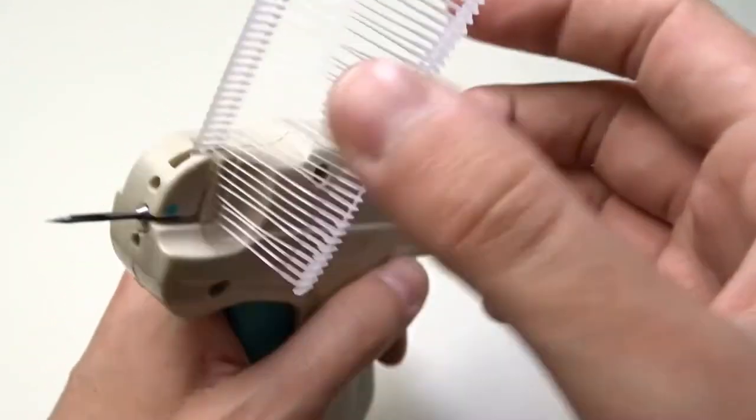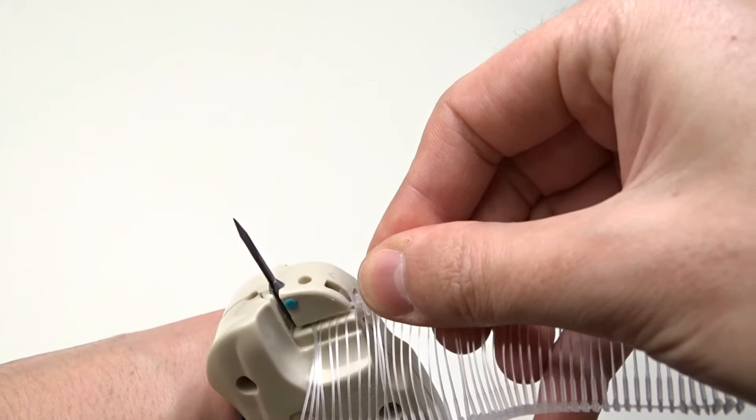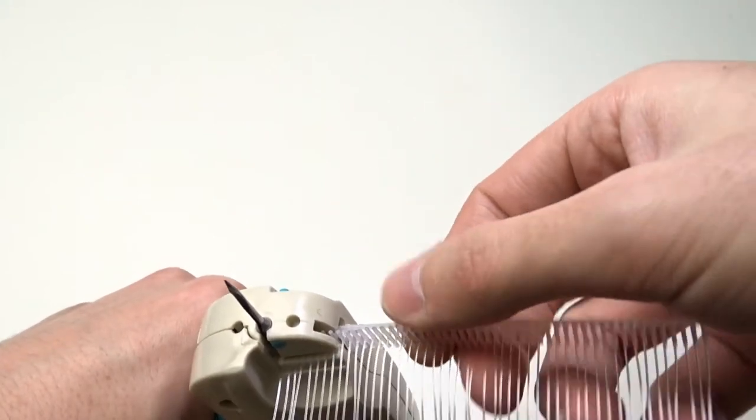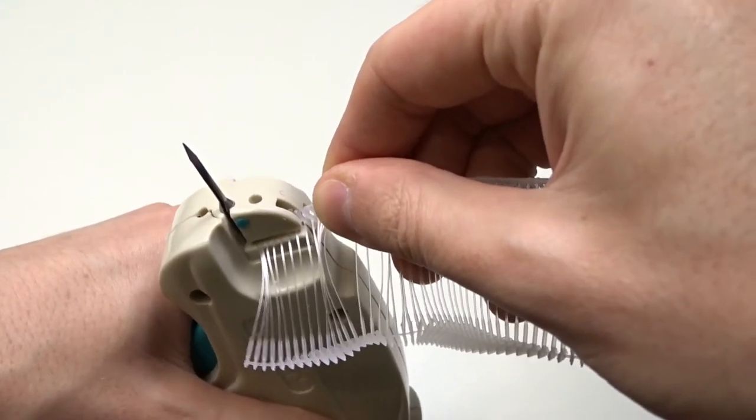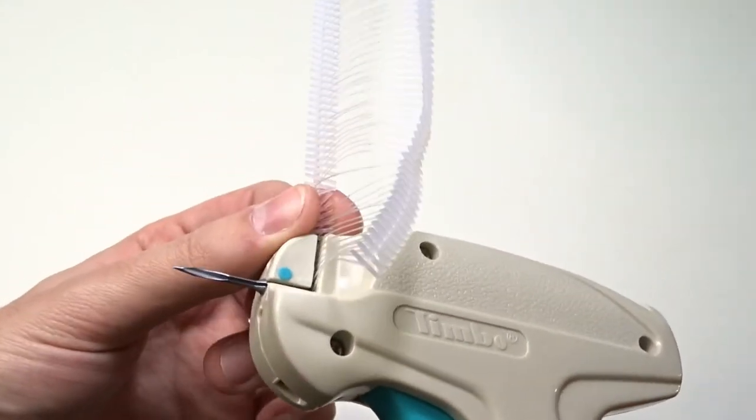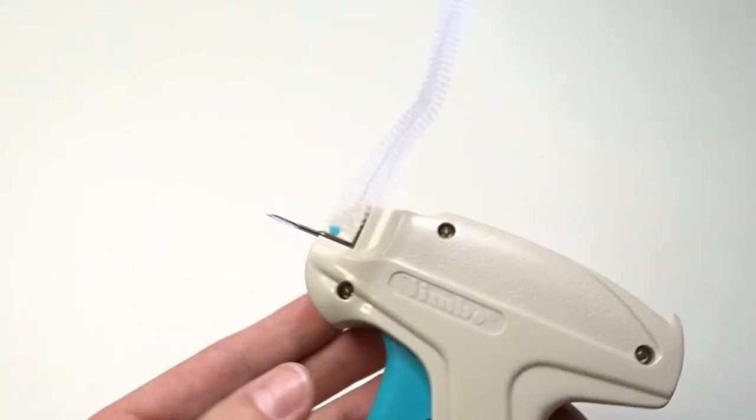Insert the fastener clip in the guide slot and push it down as far as it will go. Then the gun is ready for use.